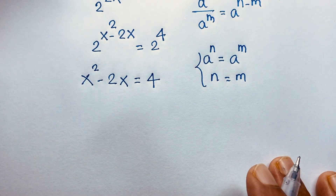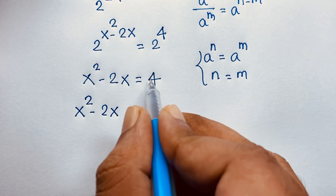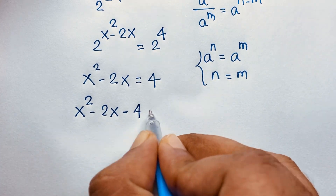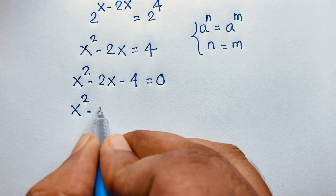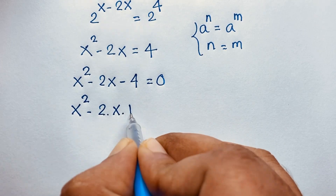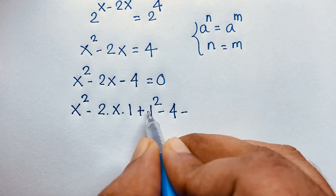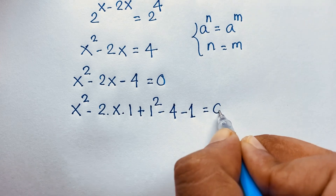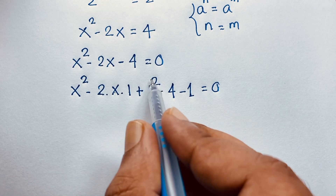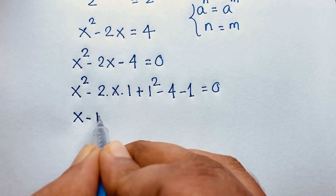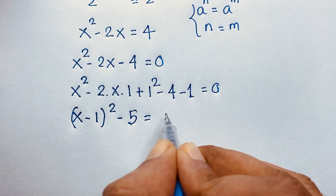So we find a nice quadratic equation: x squared minus 2x minus 4 equals 0. This is x squared minus 2 times x times 1. I take 1 squared, then subtract 1 again, giving x squared minus 2ab plus b squared minus 4 minus 1, which equals minus 5, equal to 0.